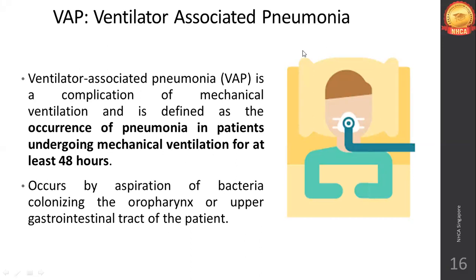The procedure of intubation and mechanical ventilation increases the risk of nosocomial bacterial pneumonia because it changes the patient's first line of defense. When you put a tube into the trachea, the mucus lining — one of the first lines of defense along with tears, nostrils, and gut lining — is compromised. The mucus lining will not be able to trap bacteria, so bacteria will directly get into the lungs, leading to pneumonia.